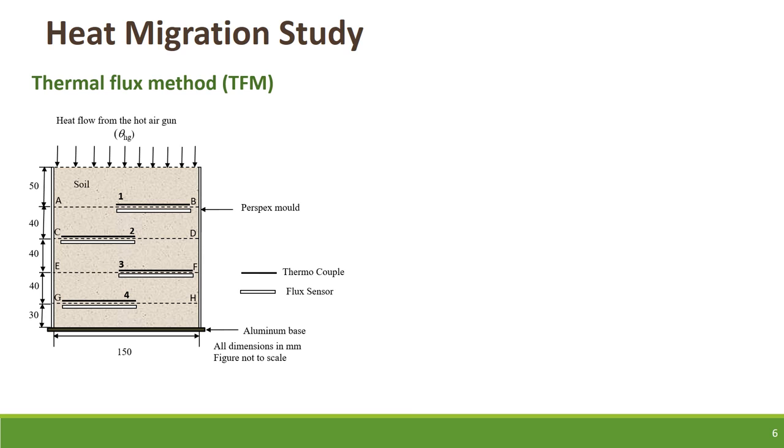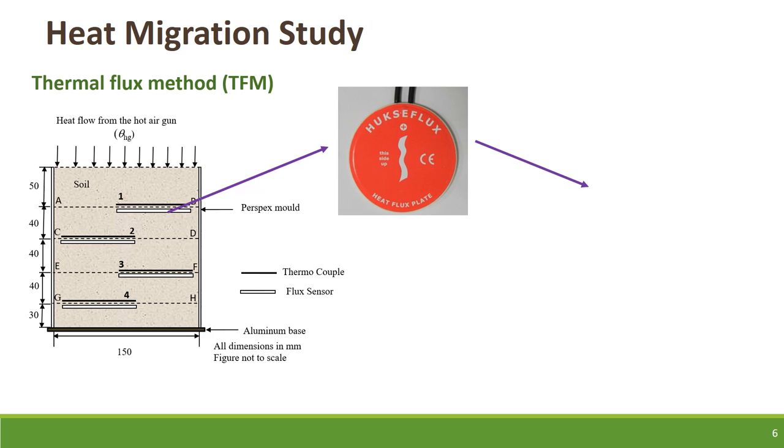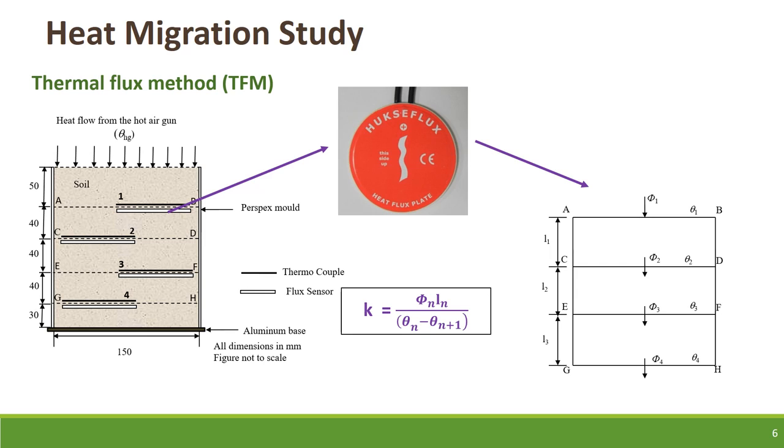Now, to establish a perfect steady state system, the bottom of the mold was taken as an aluminum base of having higher thermal conductivity. Now, this photo shows the thermal plate which was employed to establish heat migration in the soil mass. By using this particular method, the thermal conductivity of the material was also calculated by considering this particular section and employing this particular relation of one dimensional steady state heat conduction.